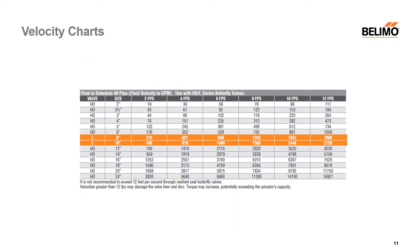Another consideration is velocity. The HD and L series valves have a 12 feet per second maximum velocity. If ordering this valve, you would take your gallons per minute, refer to the chart in our catalog, and check the maximum velocity that a given size — say a 6-inch — could handle. The Vitalik grooved series can do up to 20 feet per second, and the high-performance valves are rated up to 32 feet per second.